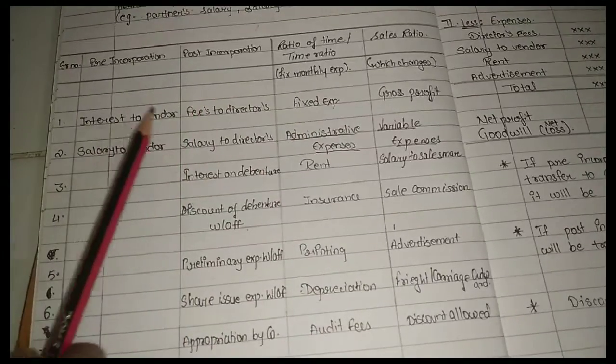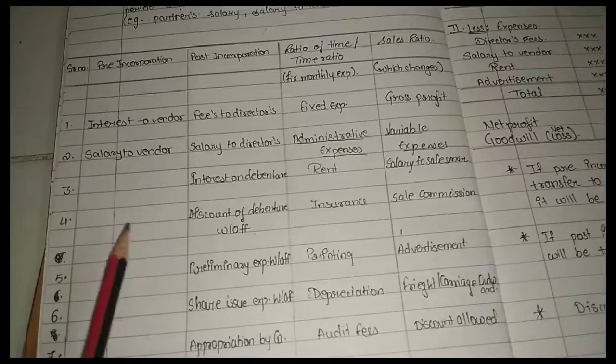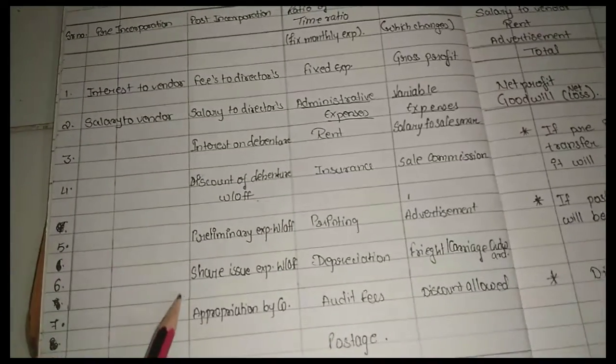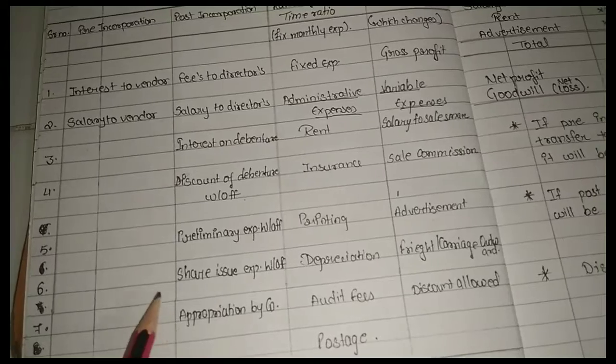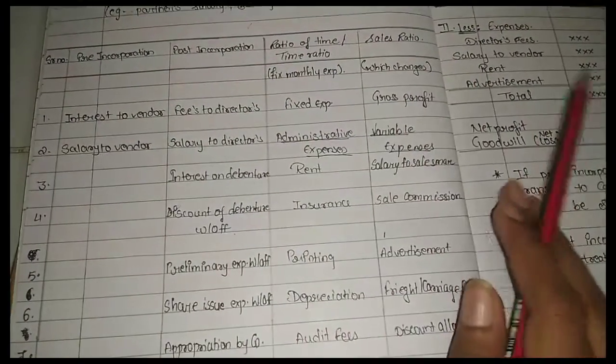After registration: registration fees and salary to vendors. Post-incorporation: fees to directors, salary, interest on debentures, discount, and appropriation by company.